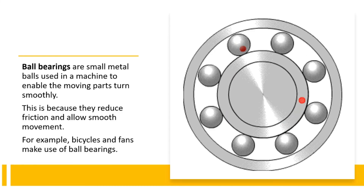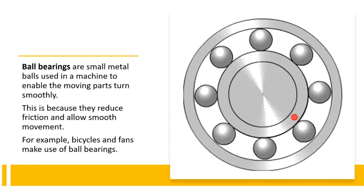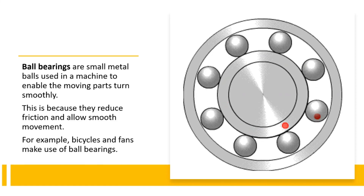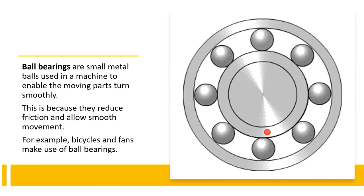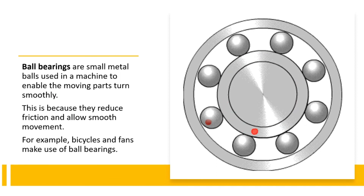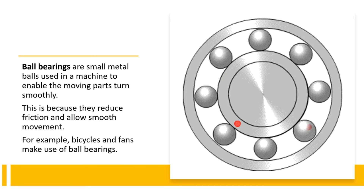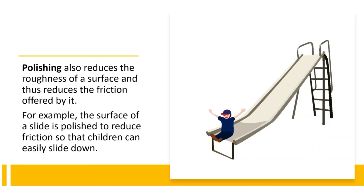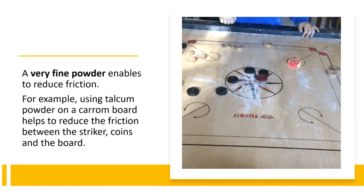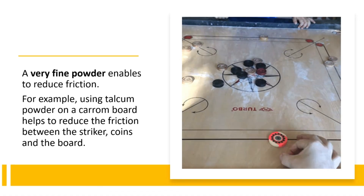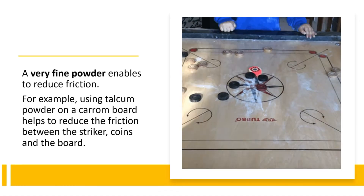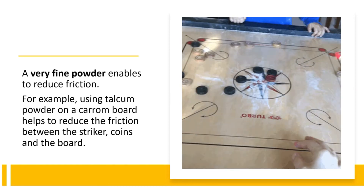Ball bearings are small metal balls used in a machine to enable the moving parts to turn smoothly. They reduce friction and allow smooth movement. For example, bicycles and fans make use of ball bearings. Polishing also reduces the roughness of a surface and thus reduces the friction offered by it. For example, the surface of a slide is polished to reduce friction so that children can easily slide down. A very fine powder also enables friction reduction. For example, using talcum powder on a carom board helps to reduce the friction between the striker, coins and the board.